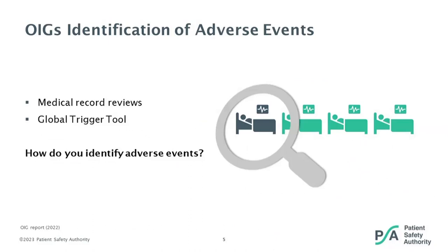How do we identify these adverse events? OIG mentions a number of things, one of those being medical record reviews and the utilization of something called a global trigger tool. The global trigger tool was originally developed by the Institute for Healthcare Improvement, better known as IHI, to systematically screen records for triggers or clinical cues that indicate patient harm.